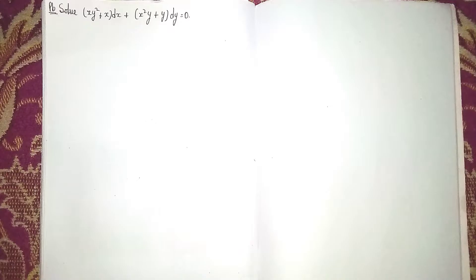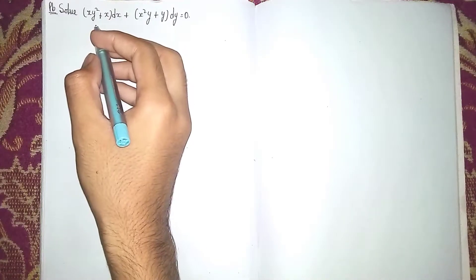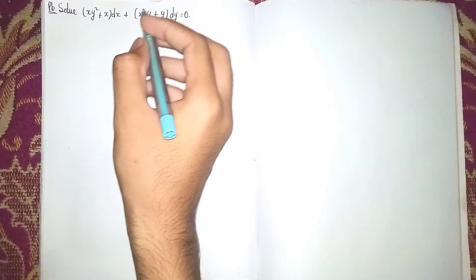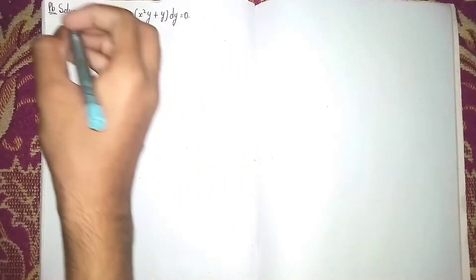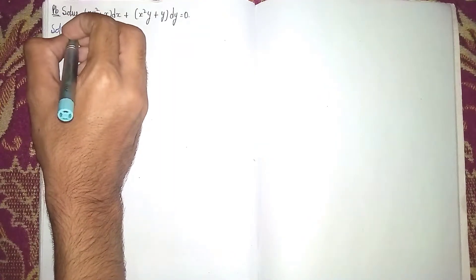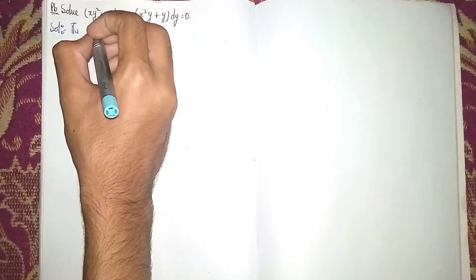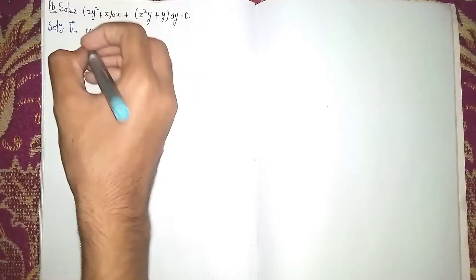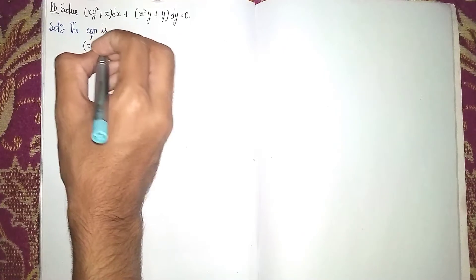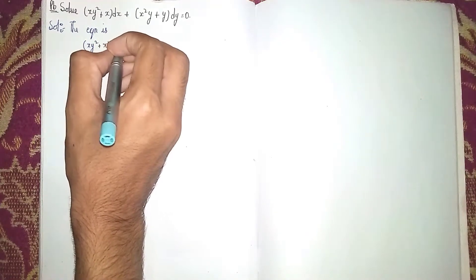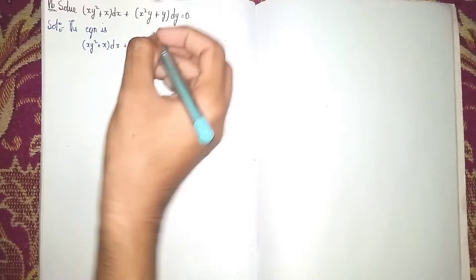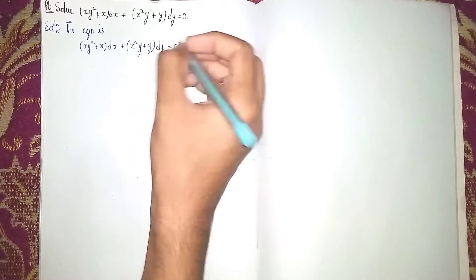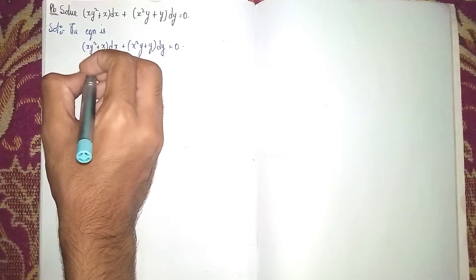Hello everyone, welcome back to my channel. Today's question is to solve (xy² + x)dx + (x²y + y)dy = 0. This is a differential equation of the first order. The given equation is (xy² + x)dx + (x²y + y)dy = 0.